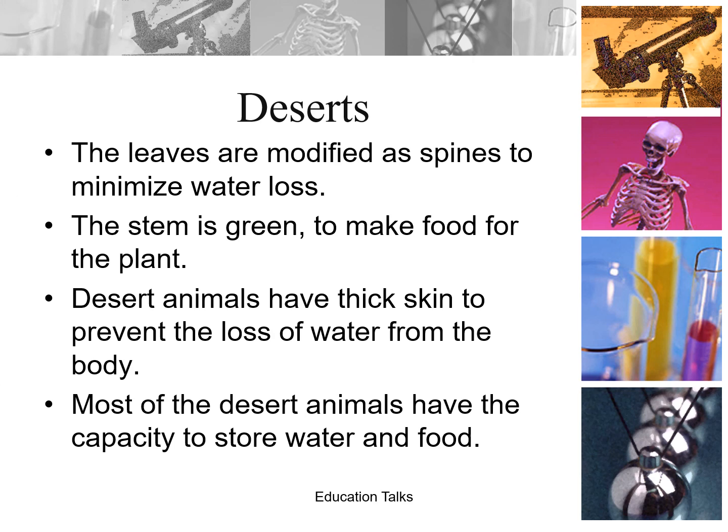Desert: leaves are modified as spines to minimize water loss, and the stem is green to make food for the plant. Desert animals have thick skin to prevent the loss of water from the body. Most desert animals also have the capacity to store water and food — such as camels, which store their food in their hump for many days.